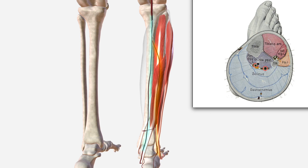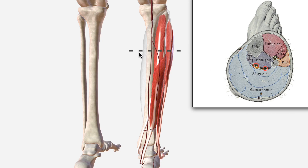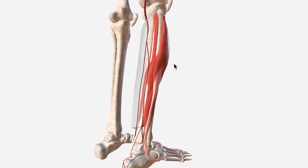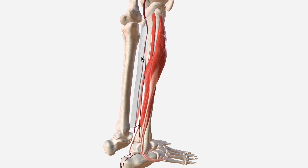This is tibialis posterior here in purple, which is here in our model. And this is soleus, which we've made transparent. I'm just going to highlight flexor hallucis longus for you — we can't see it in this image, as the cut is made around this level, at which point the fibular artery runs between tibialis posterior and soleus, just here.